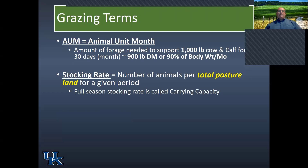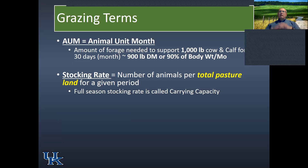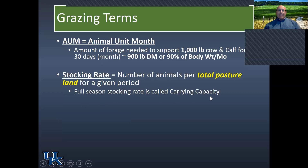Stocking rate is calculated by the total number of animals on the total pasture land for a given period — the entire livestock and the entire land area. When we think of this as a full season, we call it the full-season stocking rate, also called the carrying capacity.